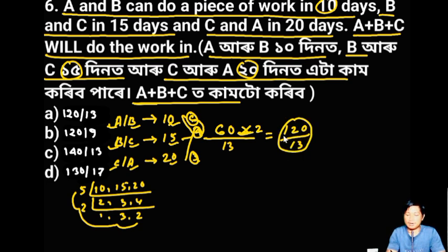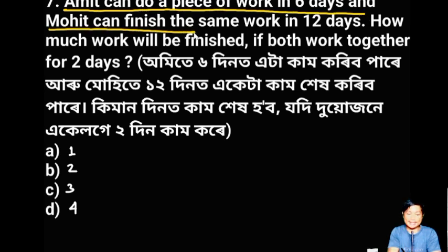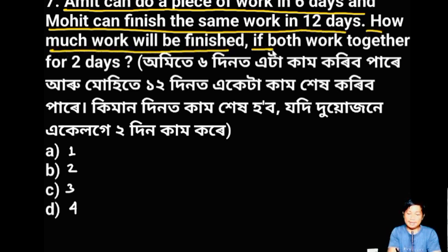This option's answer is given as the correct one. Amit can do a piece of work in 6 days and Muhit can finish the same work in 12 days. How much work will be finished if both work together for 2 days?